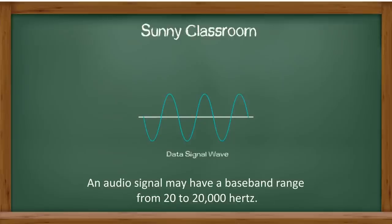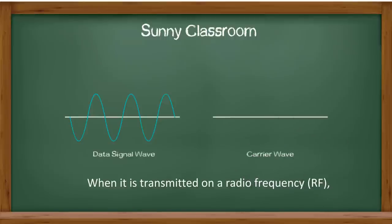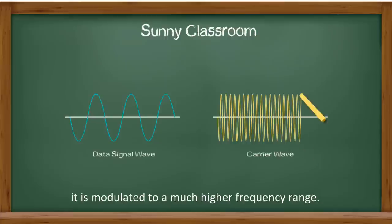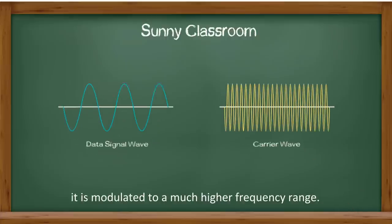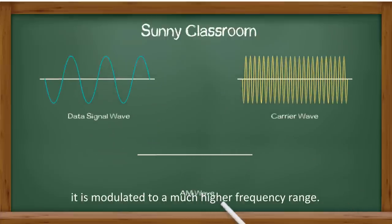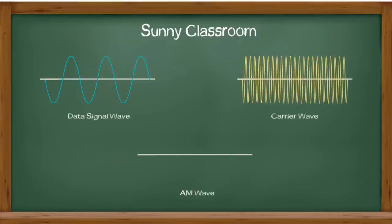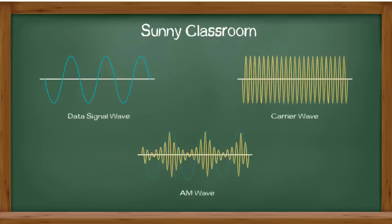For example, an audio signal may have a baseband range from 20 to 20,000 Hz. When it is transmitted on a radio frequency, it is modulated to a much higher frequency range. AM and FM are two common modulated technologies in radio broadcasting.